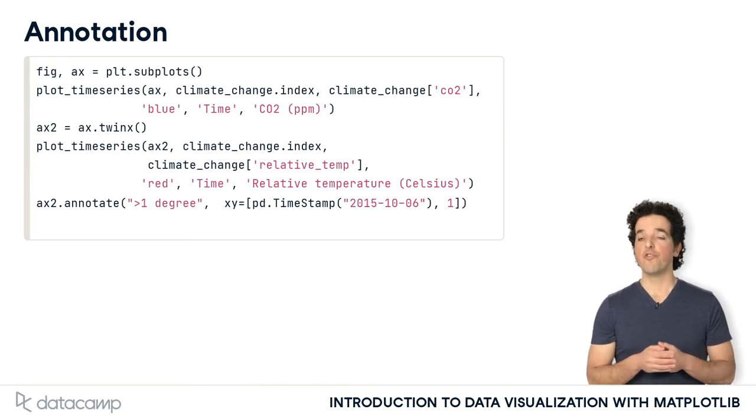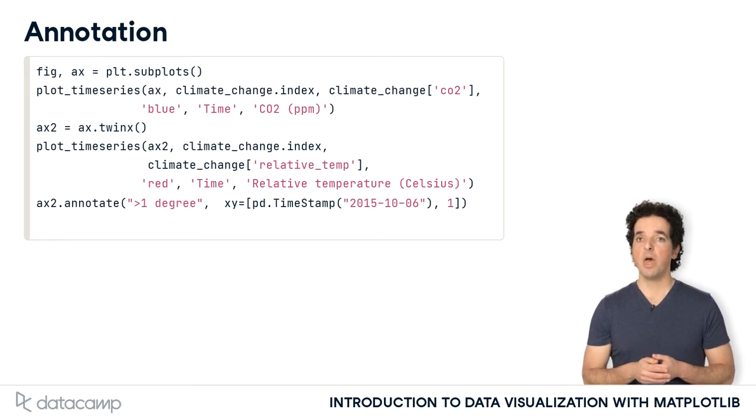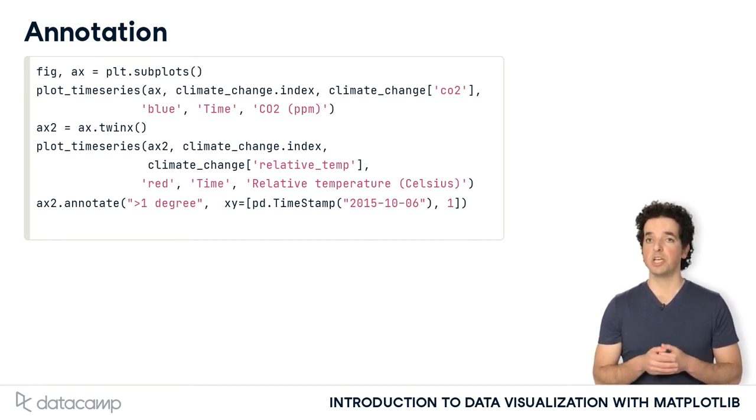Here, the value to annotate has the x position of the timestamp of that date. We use the pandas timestamp object to define that. The y position of the data is 1, which is the 1 degree Celsius value at that date.